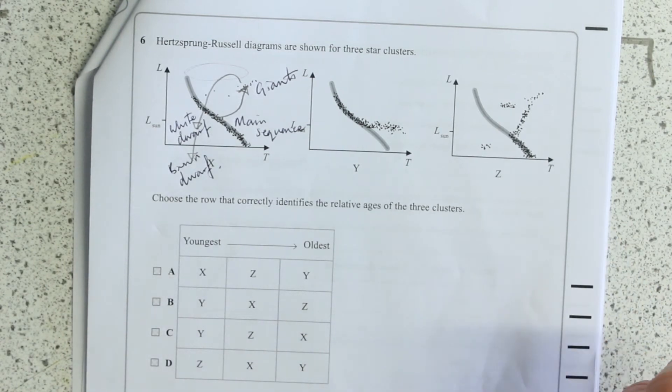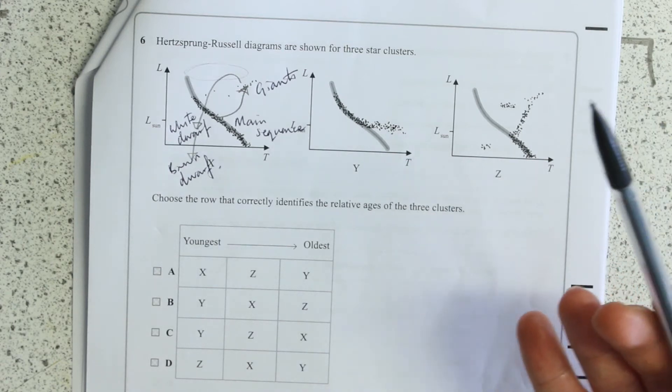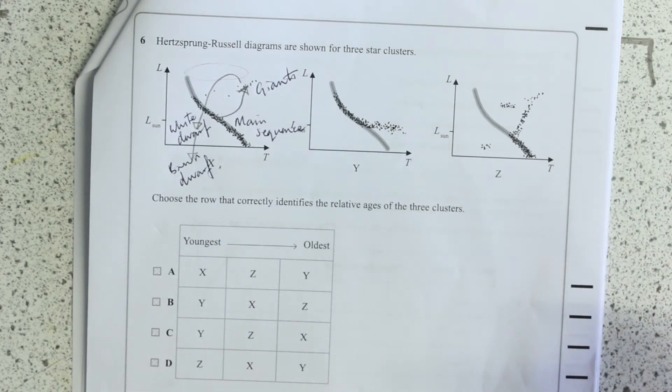Well, the other bit of information is that more massive stars burn their fuel more rapidly than less massive stars.